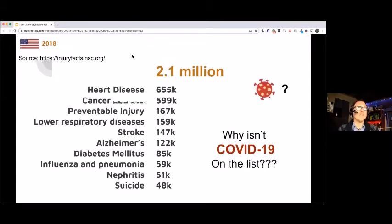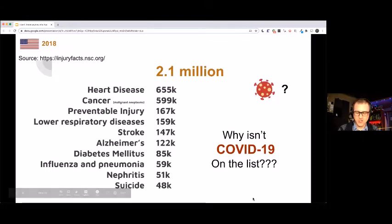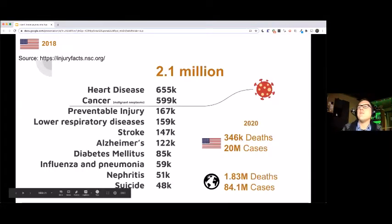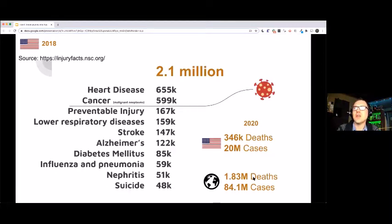First one, maybe not a surprise to some of you, heart disease. Second, no surprise to me, cancer. Some of these others as we went down, I don't know what's preventable or not. Why isn't COVID-19 on this list? Why didn't it make the top 10? Well, the simple answer is because this is 2018 and no one died of COVID-19 in 2018. But if they had, or that is to say, if these were the numbers for last year and we could line this up, where would it fall? As of my last check, 326,000 US deaths, 1.83 million worldwide and 20 million cases versus 84 million.